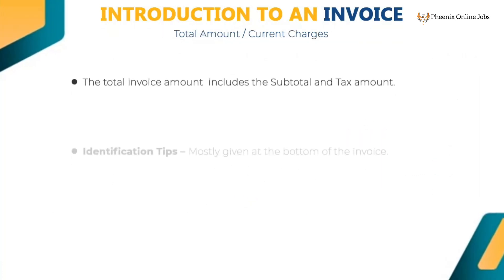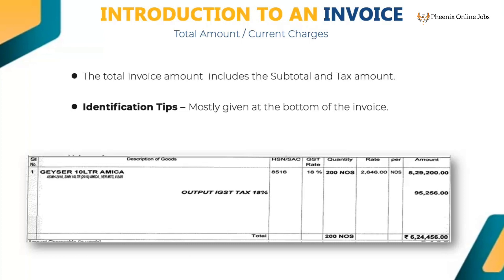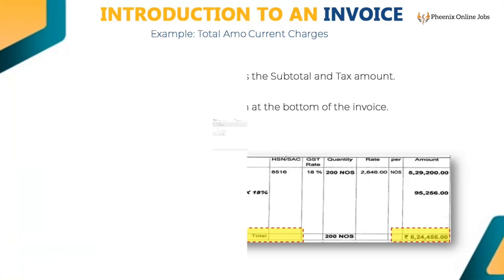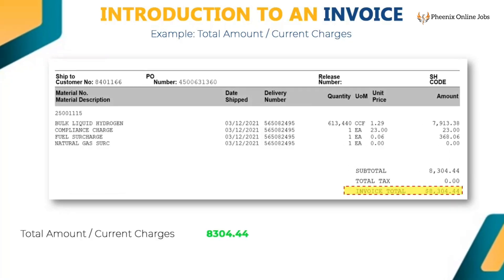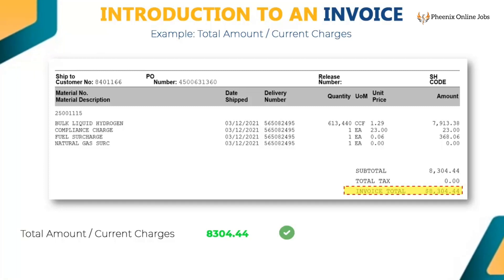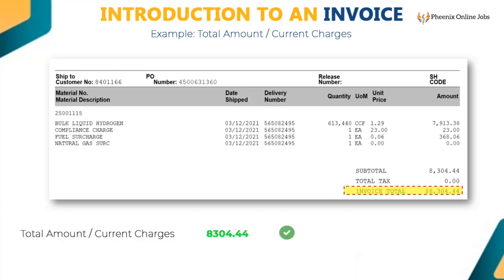The total invoice amount includes the subtotal and tax amount. It is mostly given at the bottom of the invoice. Key only the numeric value — 8304.44 is the invoice total for this example. Do not key any word like 'invoice amount,' 'invoice total,' or any symbols like dollar sign. If 'invoice total' or 'total amount' is already populated, then remove those words.